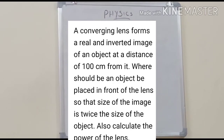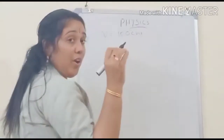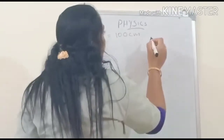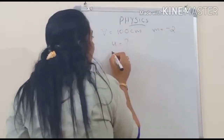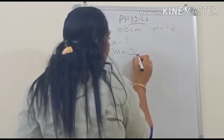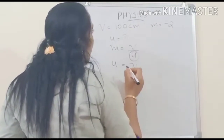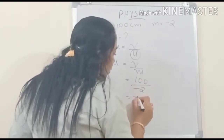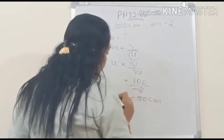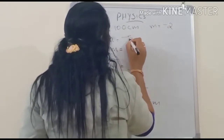From M and V, we can calculate U. We have V equals 100 cm (positive, convex lens) and M equals minus 2. The equation M equals V by U gives U equals V by M. Substituting: U equals 100 divided by minus 2 equals minus 50 centimeters. So U equals minus 50 cm.